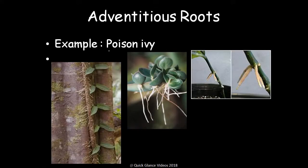For example, poison ivy has adventitious roots emerging from the leaves. From cereal nodes they also come out. This is an example of how adventitious roots function in vegetative reproduction.